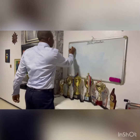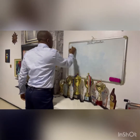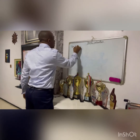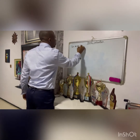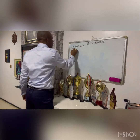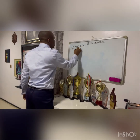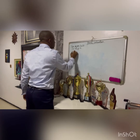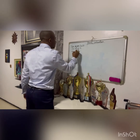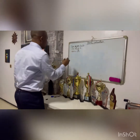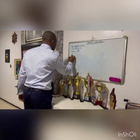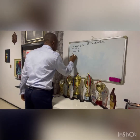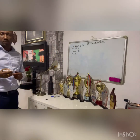Let us assume that we have a five-year $1,000 bond paying interest at 10% per annum with a yield to maturity of 15%. How should the bond be priced?